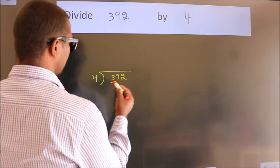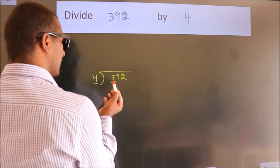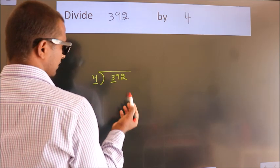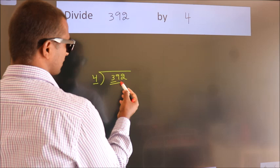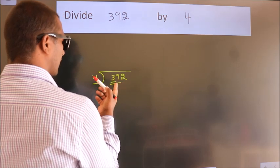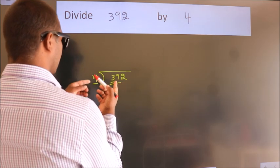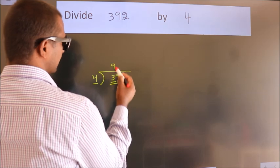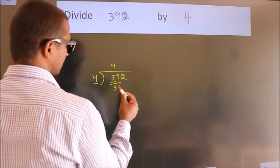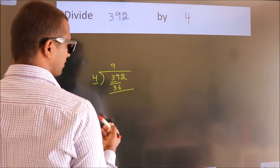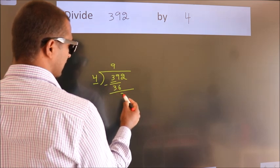Here we have 3, here 4. 3 is smaller than 4, so we should take two numbers: 39. A number close to 39 in the 4 table is 4 nines 36. Now we should subtract. We get 3.